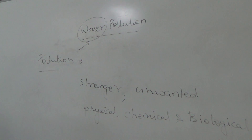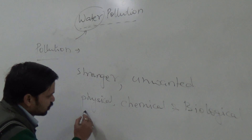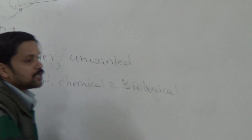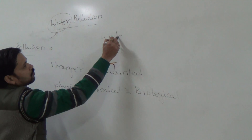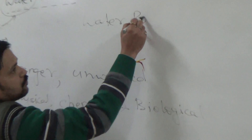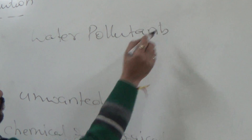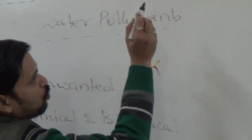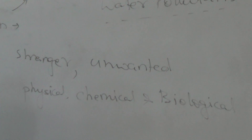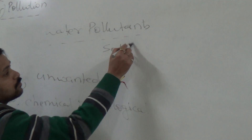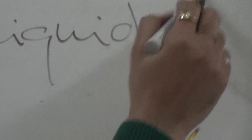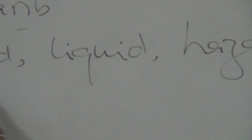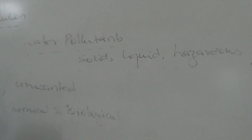The question arises: what are the substances which disturb these properties? These substances are known as water pollutants. Water pollutants are those substances that disturb the properties of water. They may be a solid material, a liquid material, or a hazardous material. These materials get mixed in from different sources and cause water pollution.